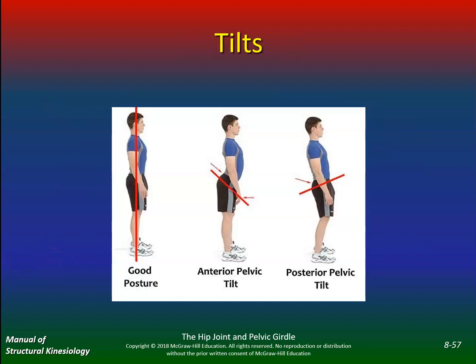Now look at posture — the tilts. This is a neutral posture. The anterior pelvic tilt — we don't like that because you get tightness in your hip flexors, weakness in your glutes, and weakness in your abs. Posterior pelvic tilt is no good here either. Think of it as Robin Williams versus J.Lo.